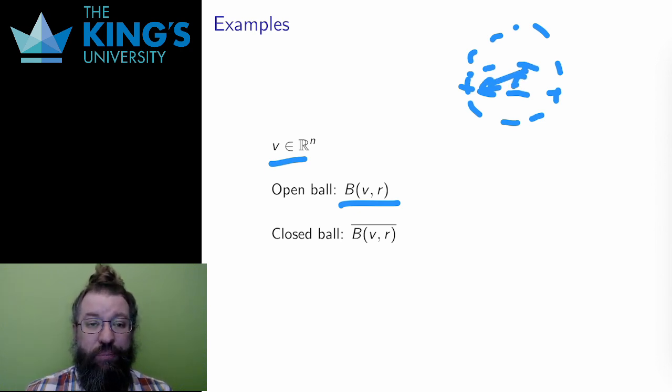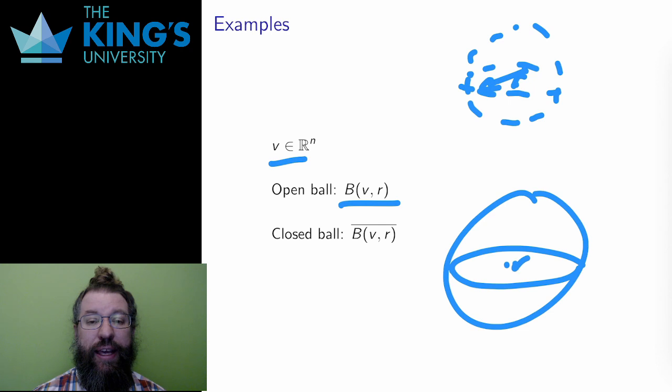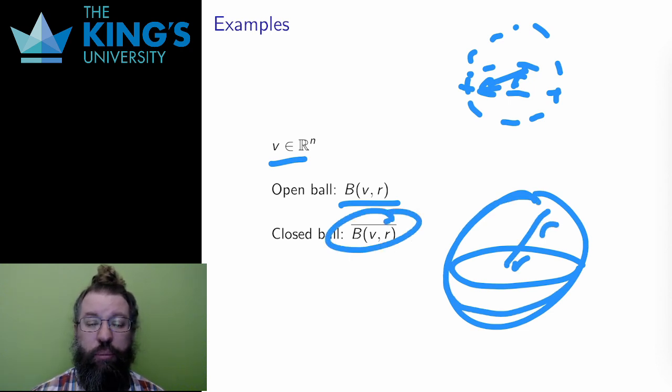Since it is open, the surface of the sphere is not part of the set. In the closed ball, the surface of the sphere is part of the set, and this is indicated by this overline, which is a pretty common notation for something being closed.